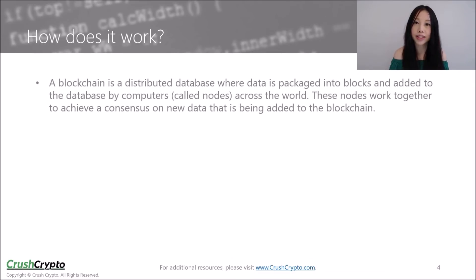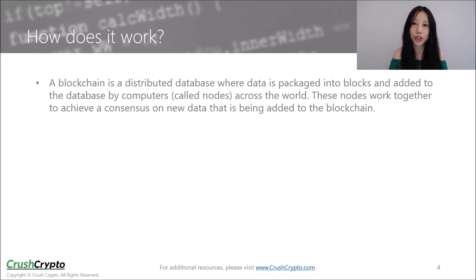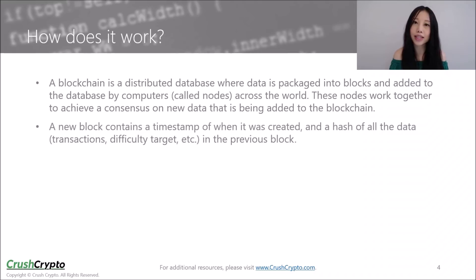A blockchain is essentially a distributed database where data is packaged into blocks and added to the database by computers, which are called nodes, around the world. These nodes work together to achieve a consensus on new data that is being added to the blockchain. A new block contains a timestamp of when it was created and a hash of all the data — including transactions, difficulty target and so on — from the previous block.